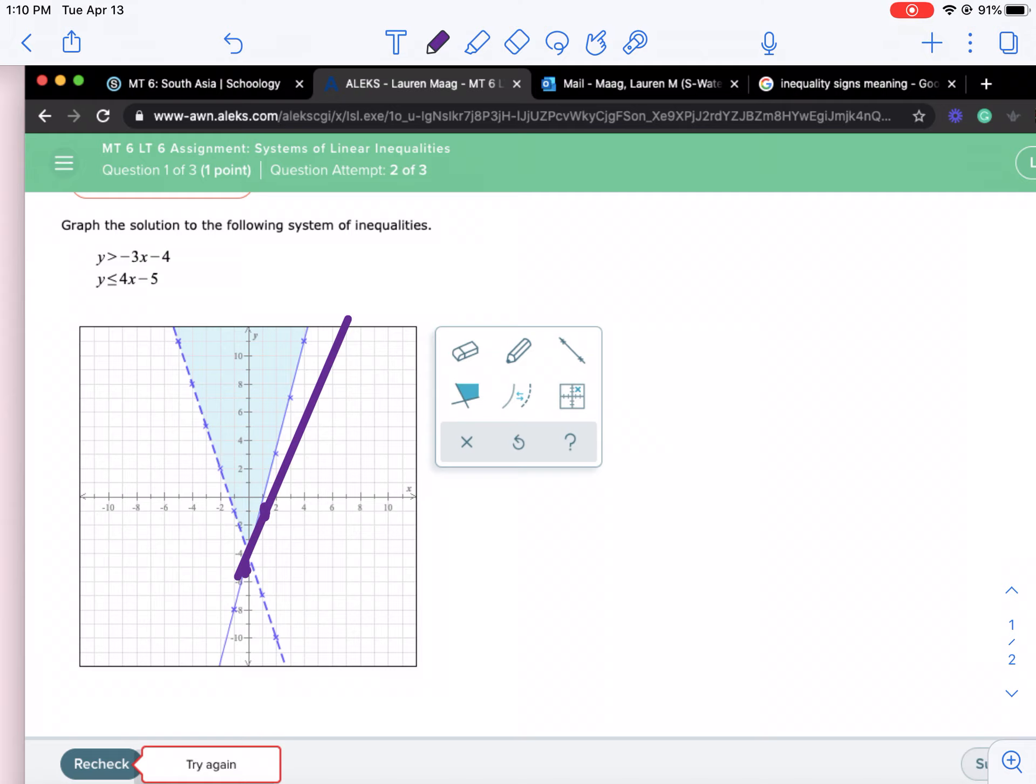And then however, we should be shading below that line. And so the part that should be shaded would be this region.